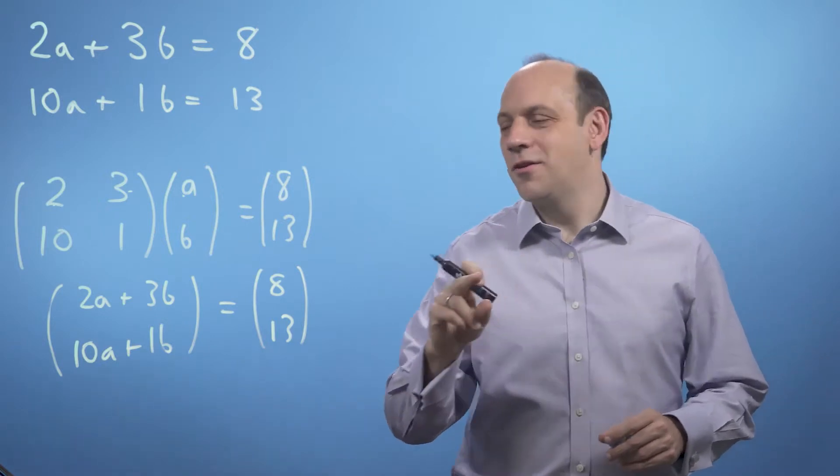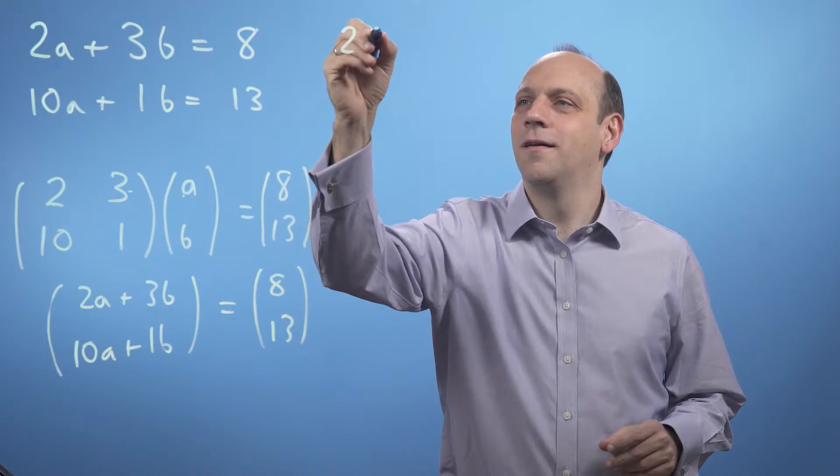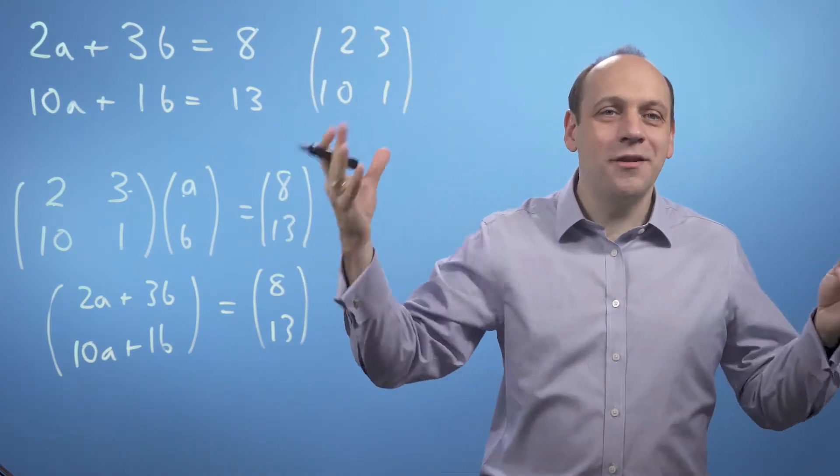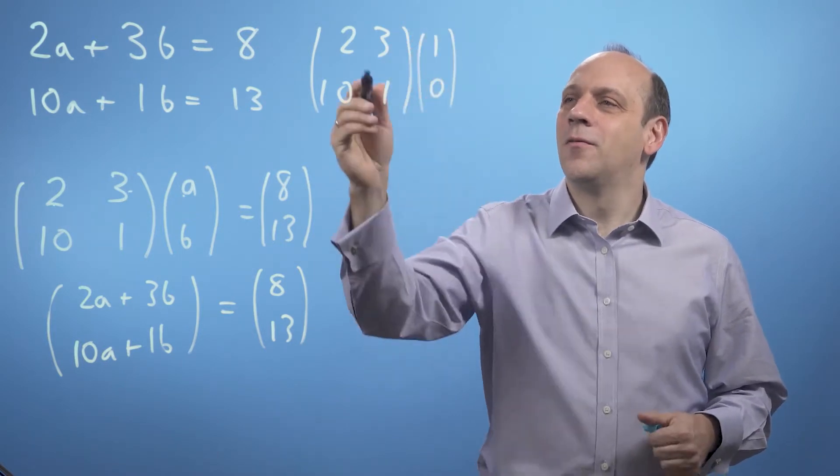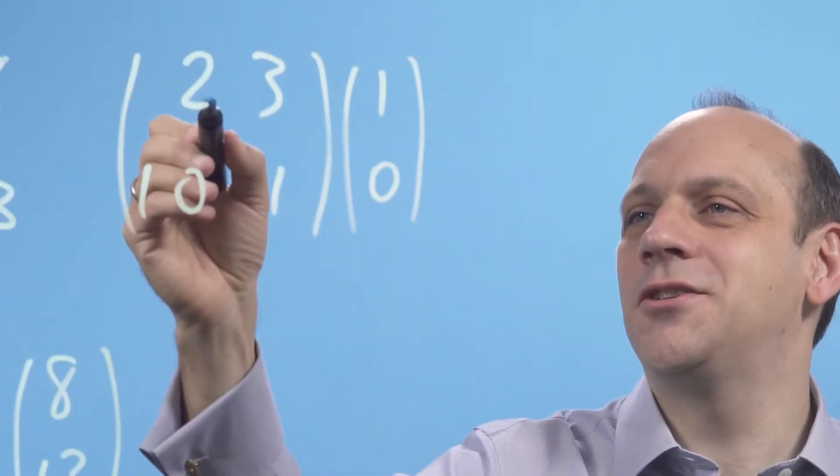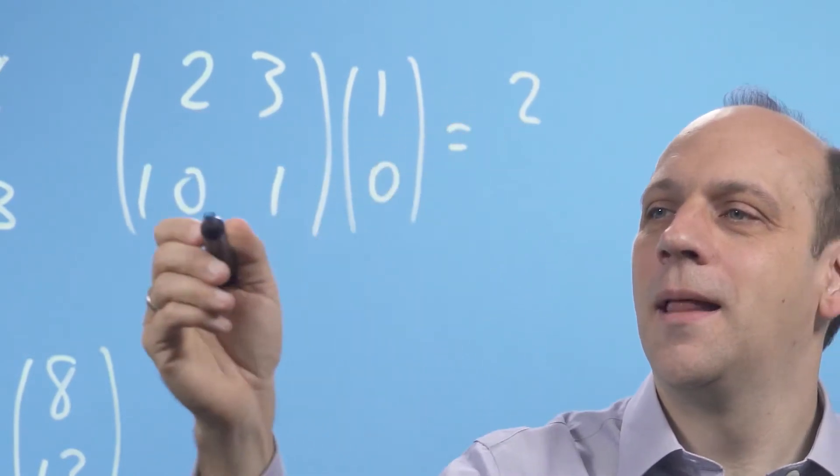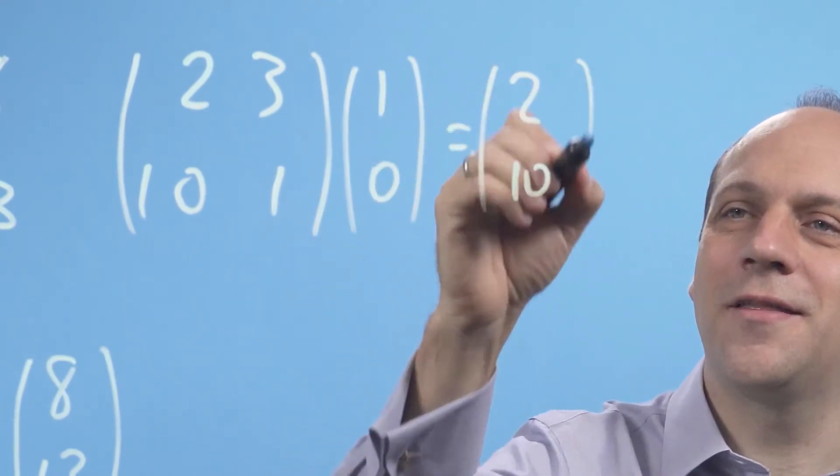Now, let's look at what happens if I multiply this matrix here by the unit basis vector, the x-axis vector. Well, when I do that multiplication, I'm going to get 2 times 1 plus 3 times 0. And I'm going to get 10 times 1 plus 1 times 0. So I get the vector 2, 10.